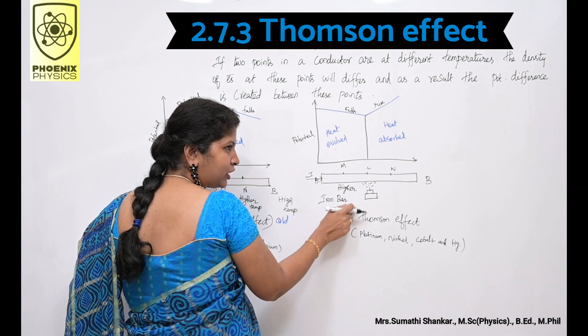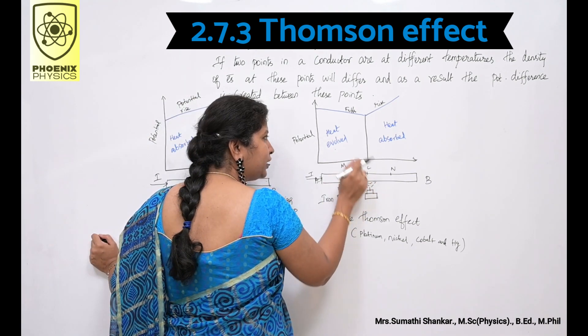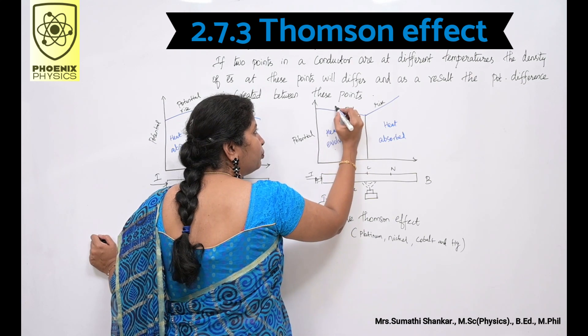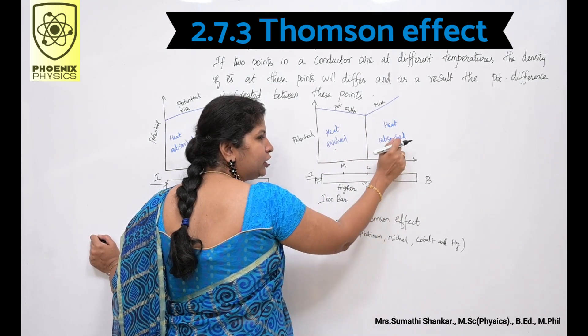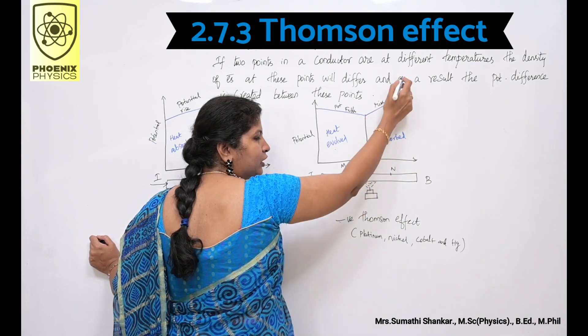Same way for this iron bar, A to C, heat is evolved. So potential falls. From C to B, heat is absorbed. Potential rises.